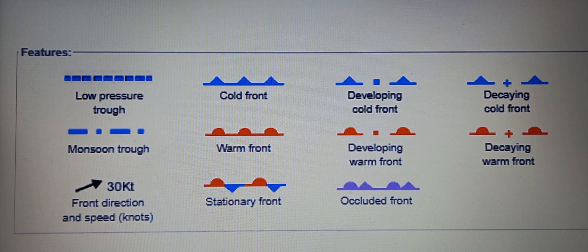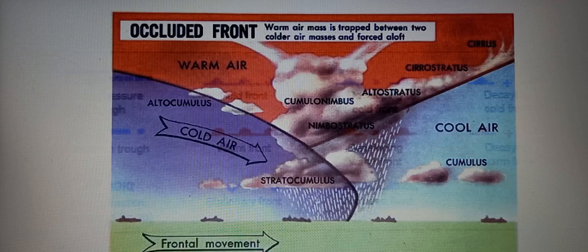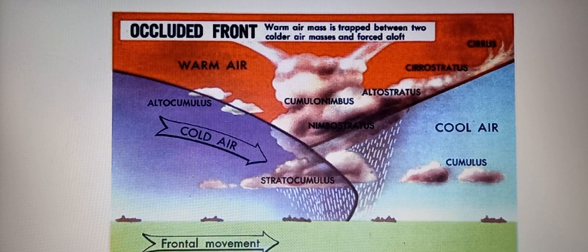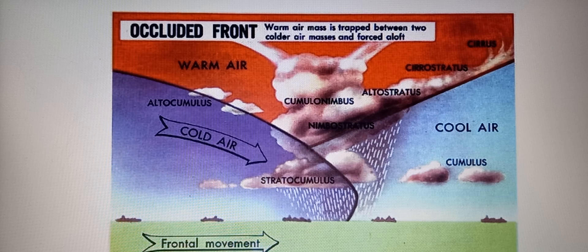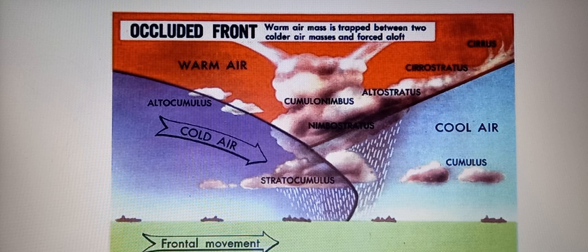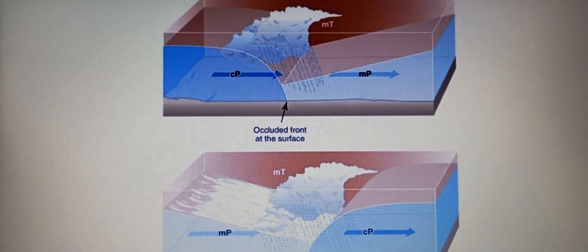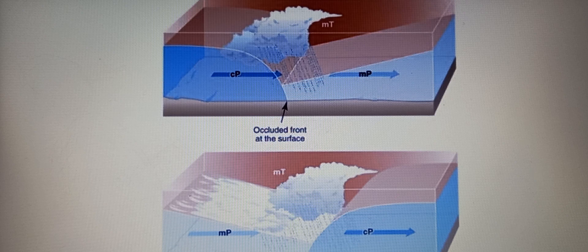Now, there are two types of occluded fronts. We have cold occlusion, where the cold front is colder than the air behind the warm front. And the second one is warm occlusion. Here, the cold front is not as cold as the air behind the warm front.